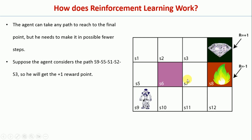We have multiple paths to reach the goal state. For now, just understand that one path is: the agent can go from S9 to S5, S5 to S1, S1 to S2, S2 to S3, and finally reach the goal state. How to determine this optimal path will be discussed in detail with the help of different algorithms in the next videos.